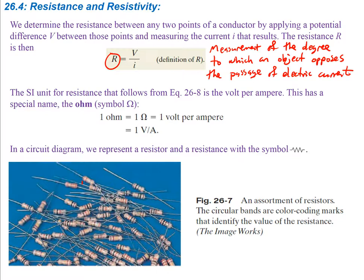Resistance is the measurement of the degree to which an object opposes the passage of electric current. It's a property of the specific object. The more resistance you have, the less current you're going to allow to flow for a given potential difference. This is usually written as V = IR, which is also considered Ohm's Law.